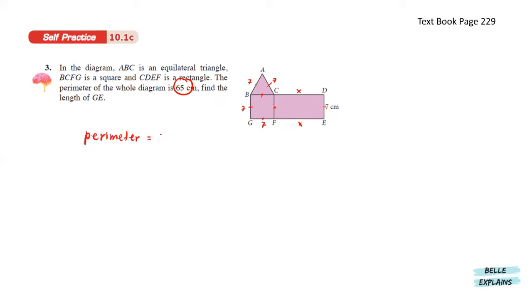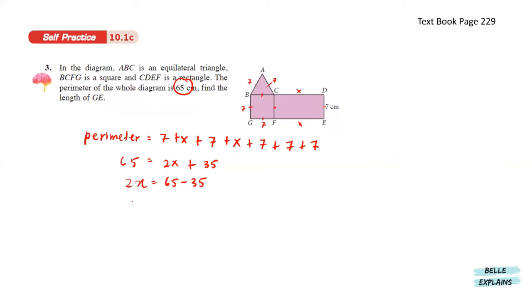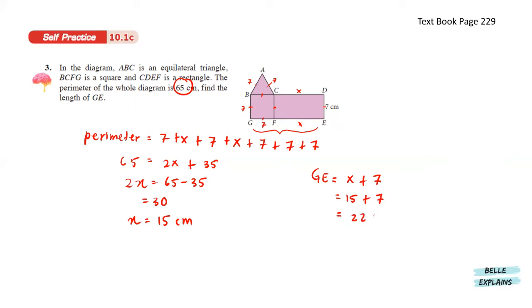The perimeter will be 7 plus x plus 7 plus x plus 7 plus 7 plus 7. This gives us 65 equals to 2x plus 35. So 2x equals to 65 minus 35. Then we get the value of x, which is 15 centimeters. So GE equals to x plus 7, which means 15 plus 7. We get the value of 22 centimeters.